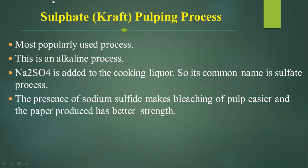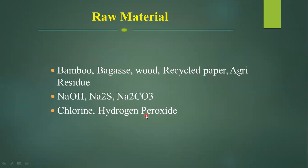Now we will discuss the sulphate process. It is the most popular process for pulp manufacturing and it is an alkaline process. In this process we use sodium sulphide (Na2S) in the cooking liquor, so its common name is the sulphate process. The presence of sodium sulphide makes bleaching of the pulp easier and the paper produced has better strength.